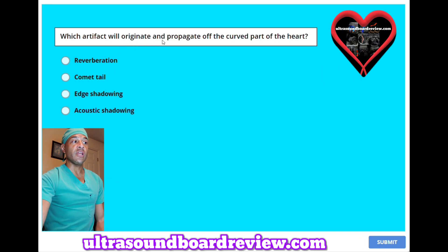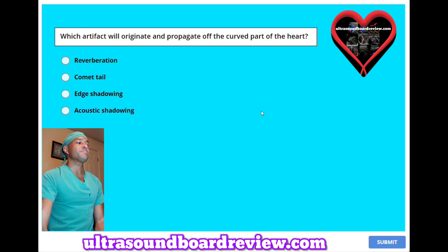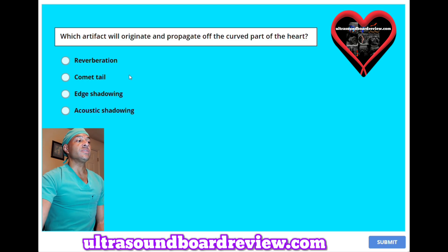Which artifact will originate and propagate off the curved part of the heart? A, reverberation. B, comet tail. C, edge shadowing. Or D, acoustic shadowing. The answer is C, edge shadowing.